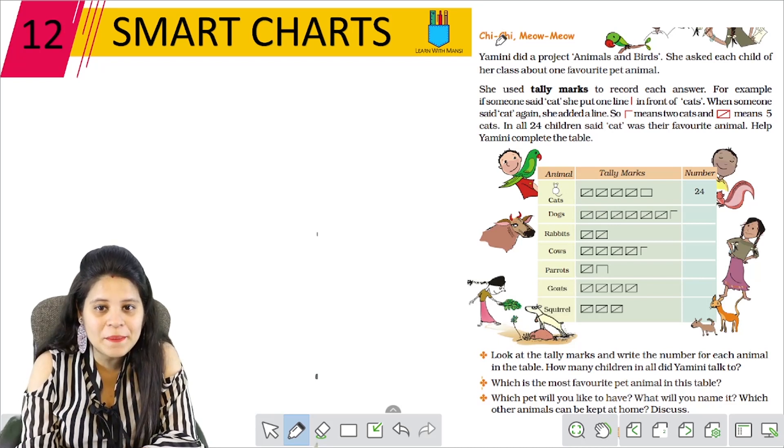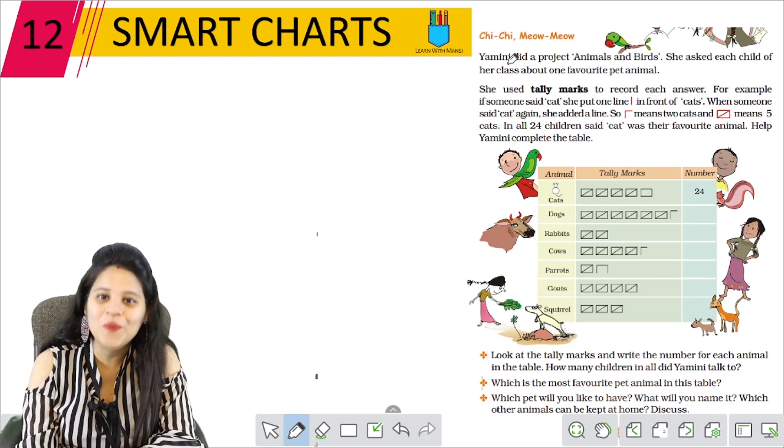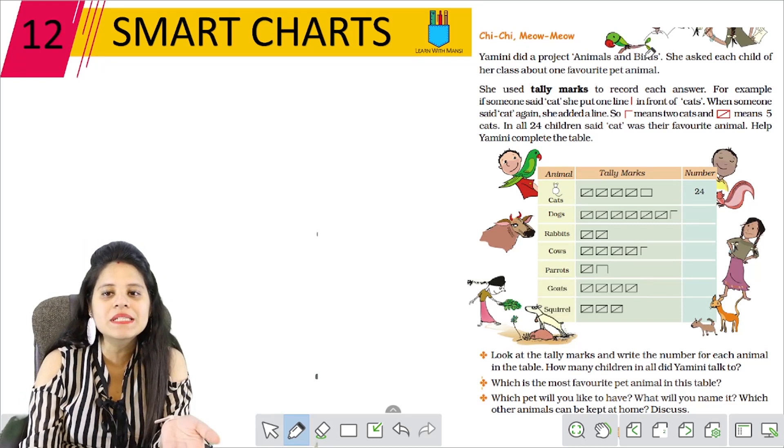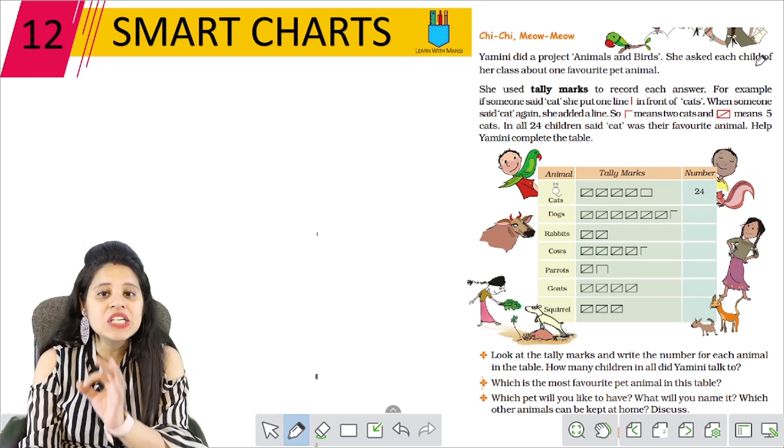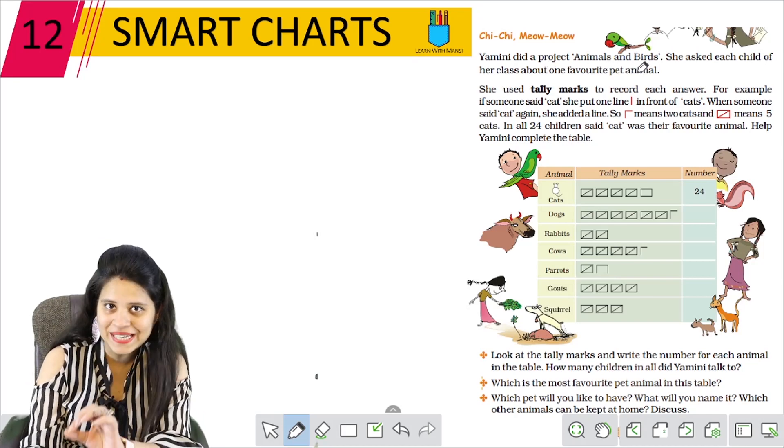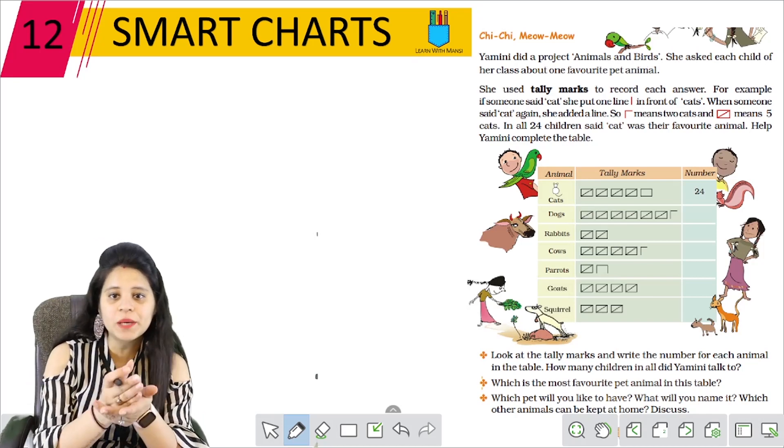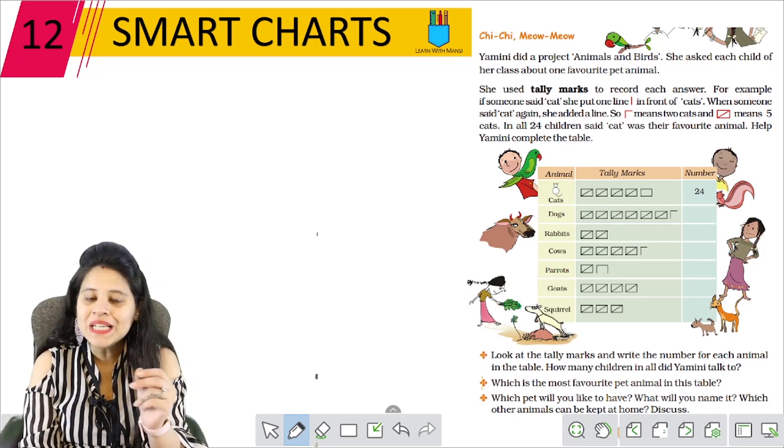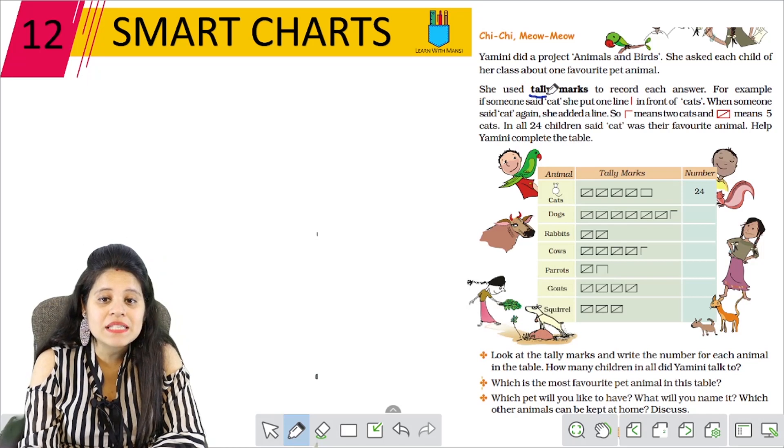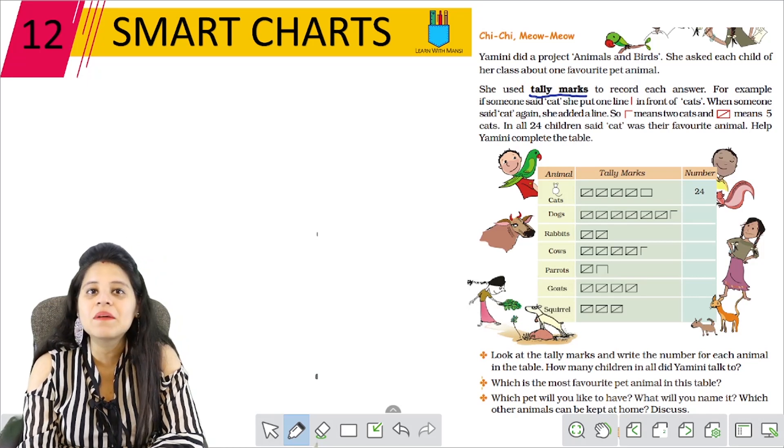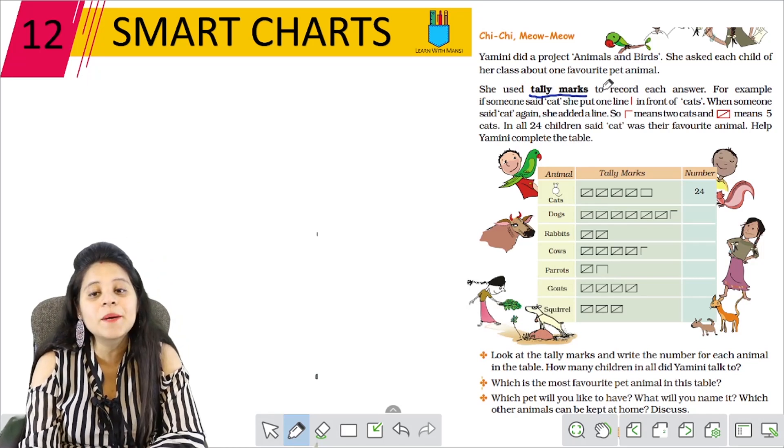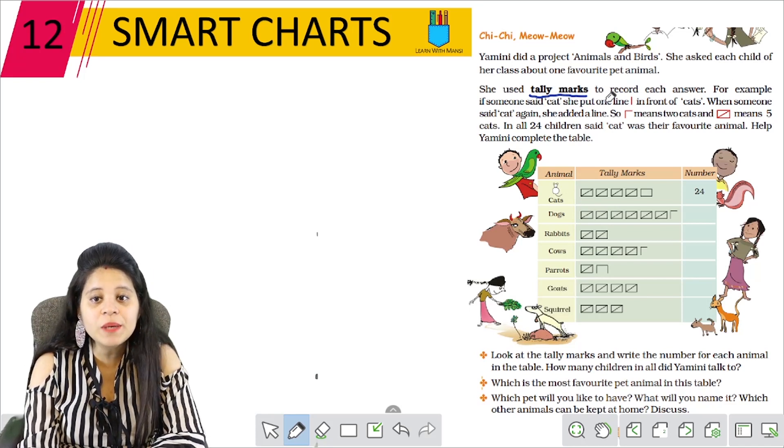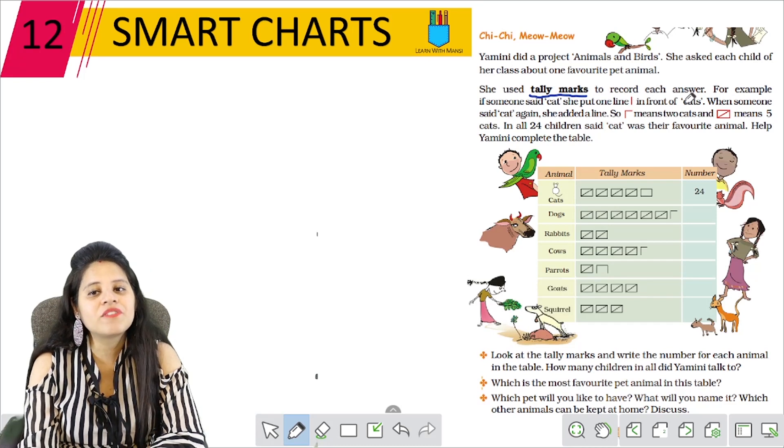The first topic we have is Meow Meow. Yamini did a project, Animals and Birds. She asked each child of her class about one favourite pet animal. She used tally marks. Now tally marks is a new word. To record each answer. For example, if someone said cat, she put one line in front of cats.